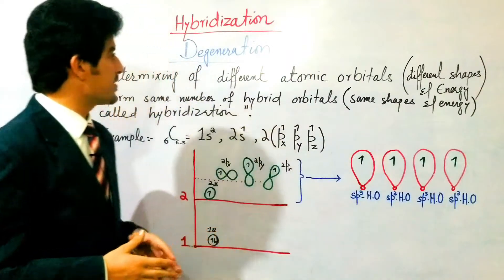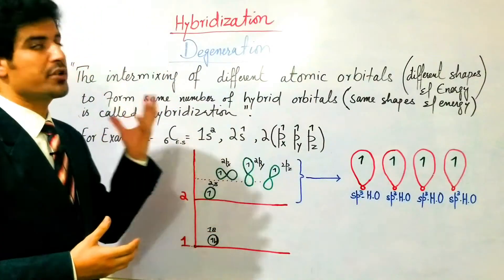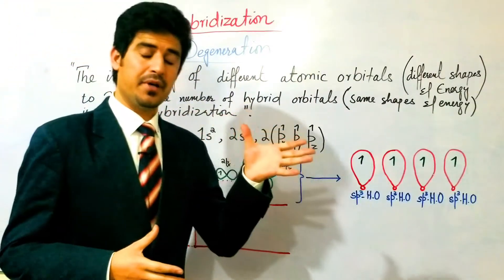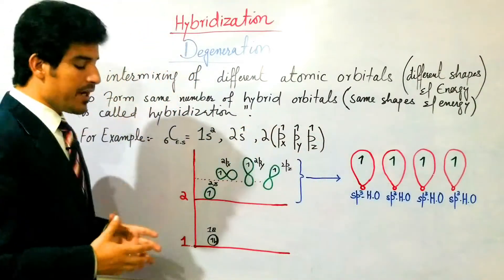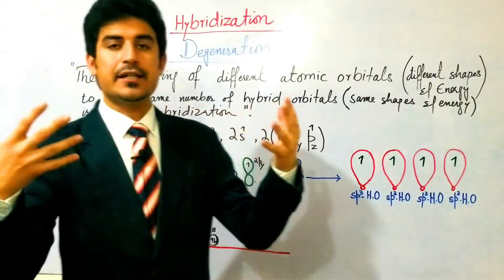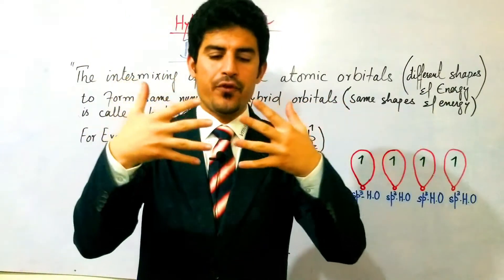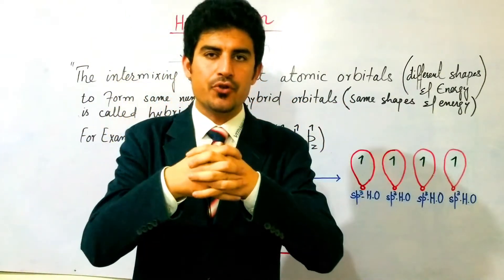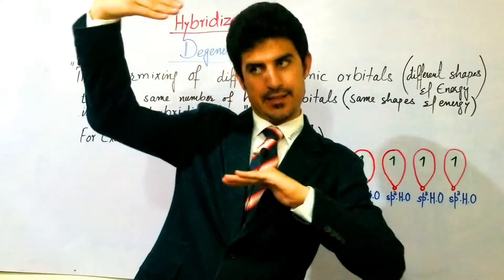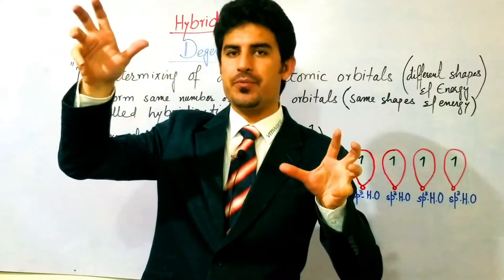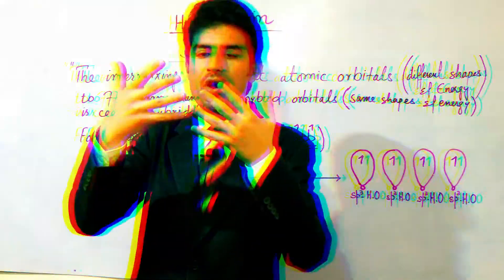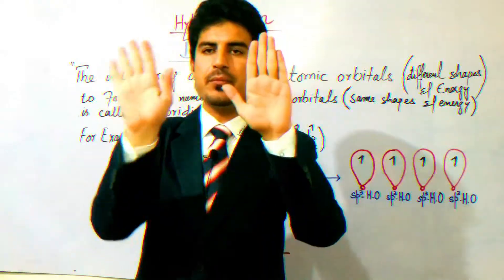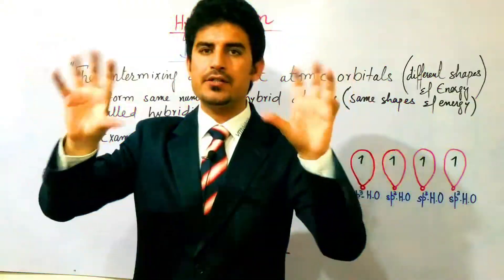First we will define hybridization. Hybridization is the intermixing of atomic orbitals of different energy and different shapes to form hybrid orbitals of same energy and same shapes. It's called hybridization.